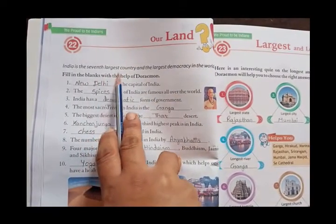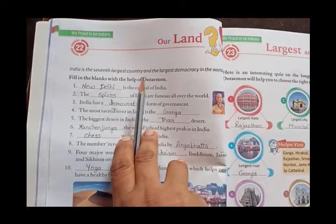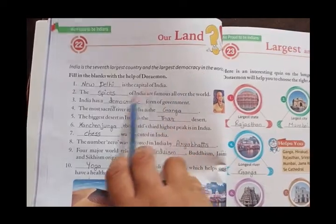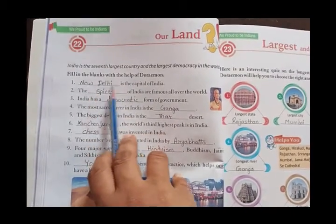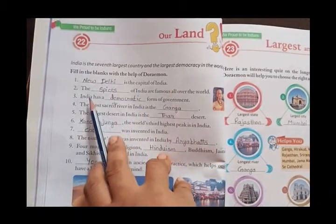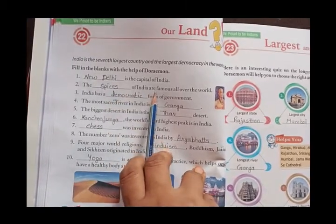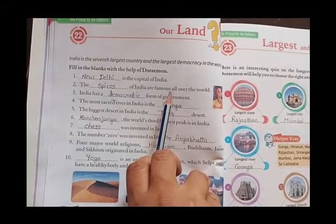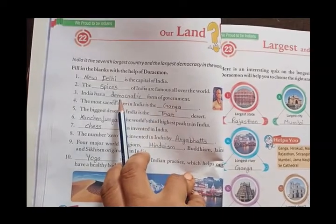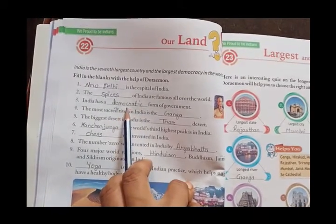India is the seventh largest country and the largest democracy in the world. Fill in the blanks with the help of Doraemon. First: New Delhi — N-E-W D-E-L-H-I — is the capital of India. The spices — S-P-I-C-E-S — of India are famous all over the world. India has a democratic — D-E-M-O-C-R-A-T-I-C — form of government, meaning it is a democracy.